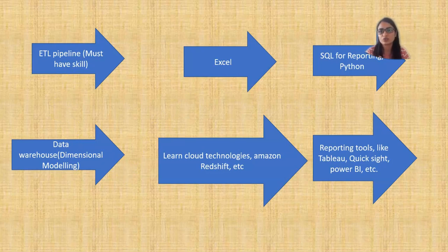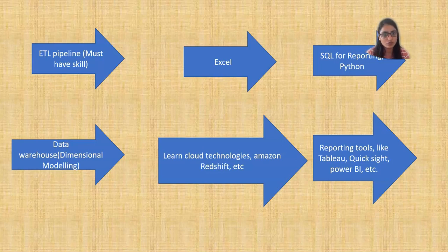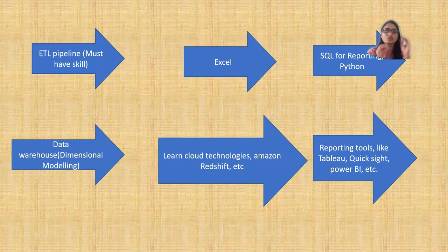If you are planning to transition to a BI role — business intelligence engineer, BI analyst, or data analyst — these are the skills you must have. First, you must know how to write an ETL pipeline: extract, transform, and load. Stakeholders often ask for reporting solutions that require pulling data from multiple sources, transforming it per business needs, loading it to a data warehouse, and connecting that warehouse to a reporting tool.